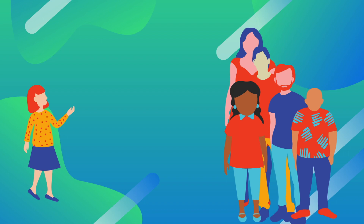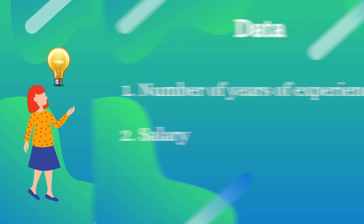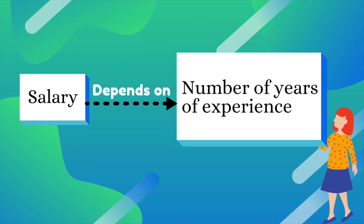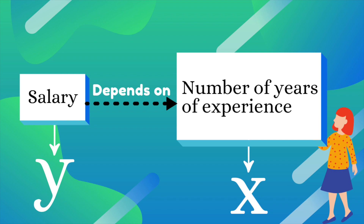I believe the best way to learn is through examples. So let's imagine you're a recruiter of a company and you're trying to gauge how much to pay new hires. You have two types of data of your existing employees: the number of years of experience they have and their current salary. Since their salary depends on the number of years of experience they have, employee salary will be the y variable and the number of years of experience will be the x variable.